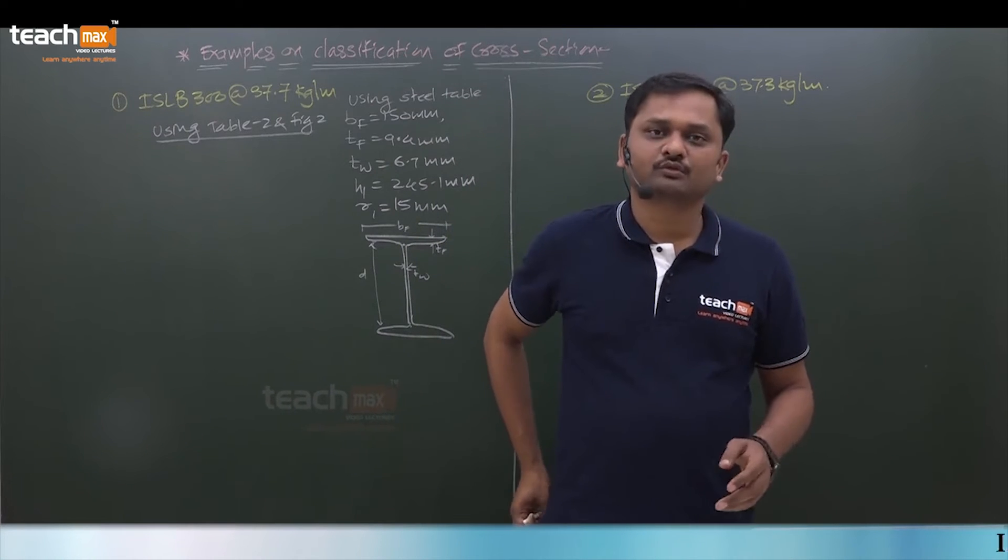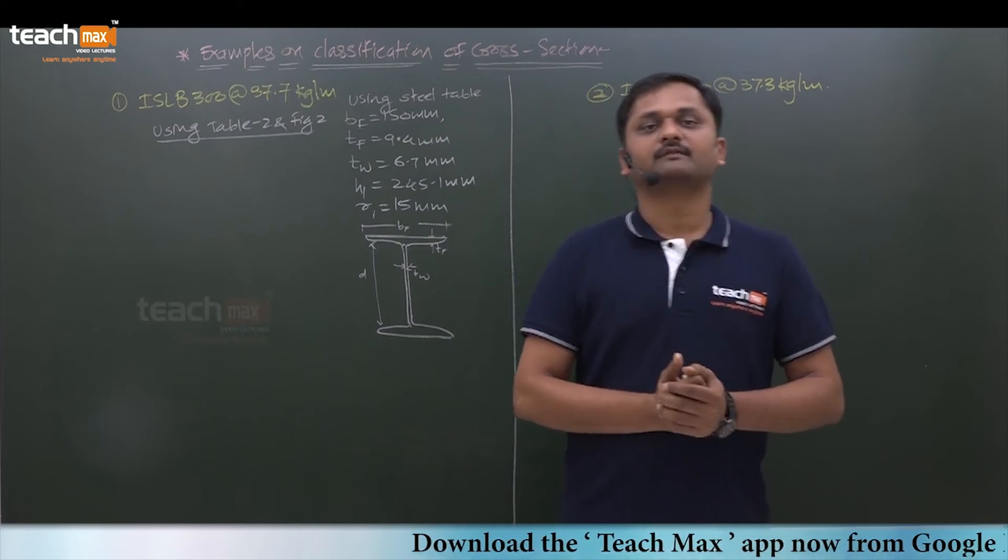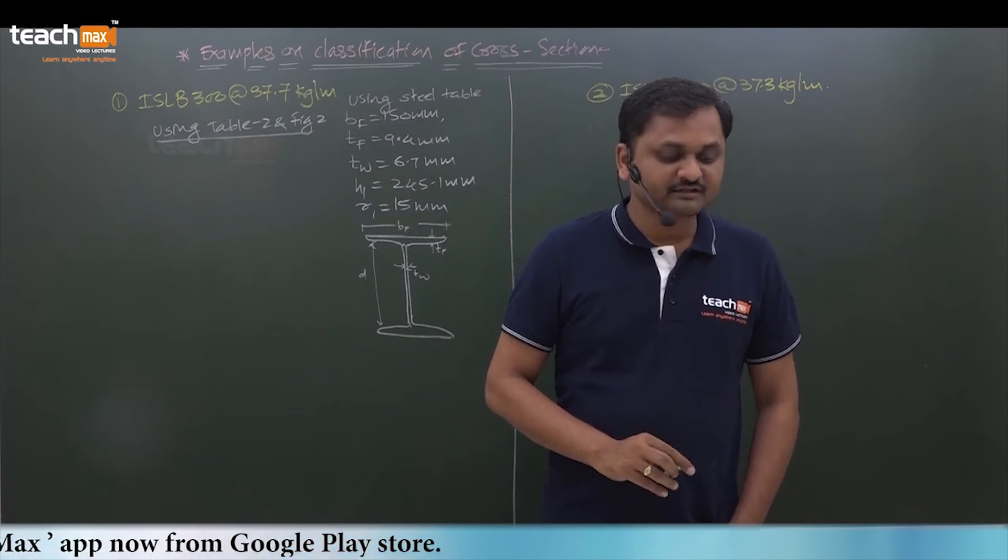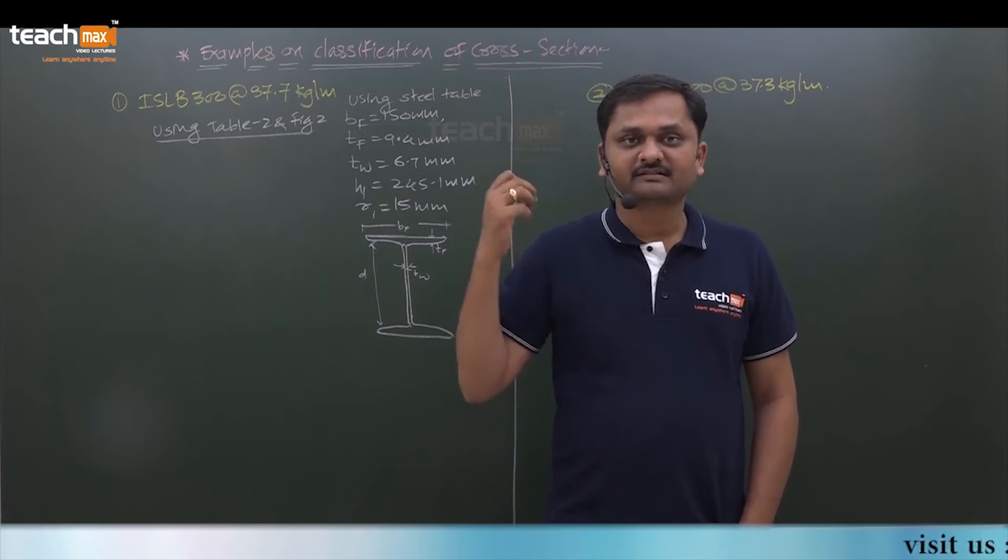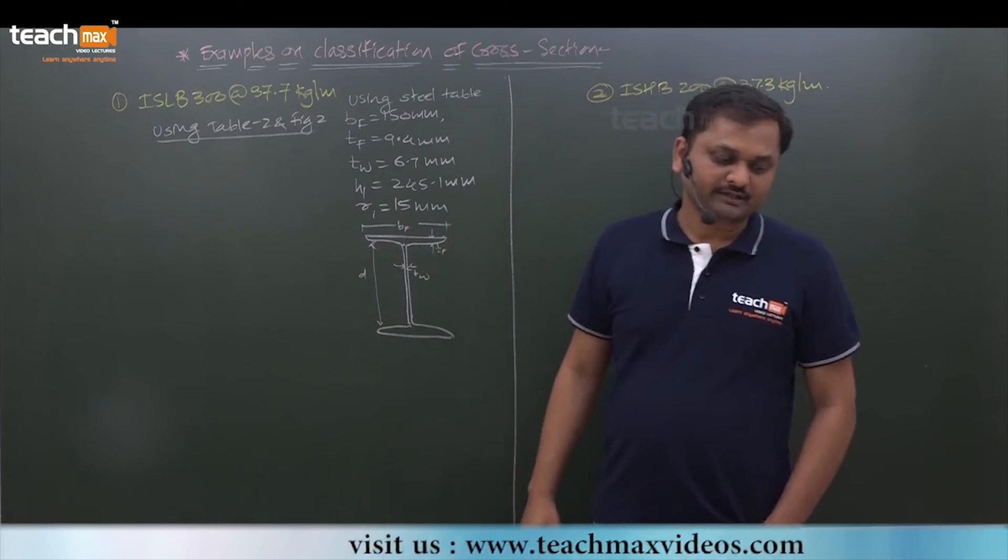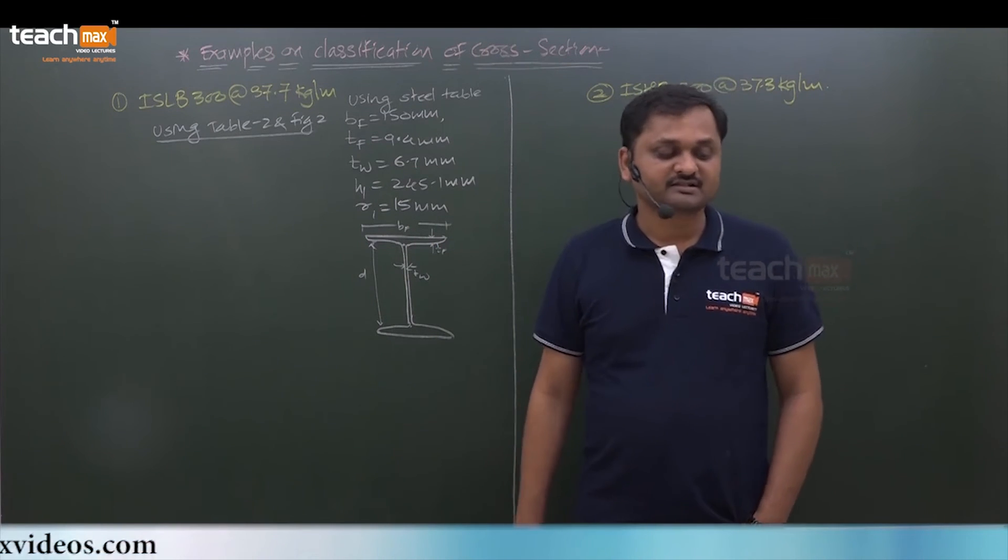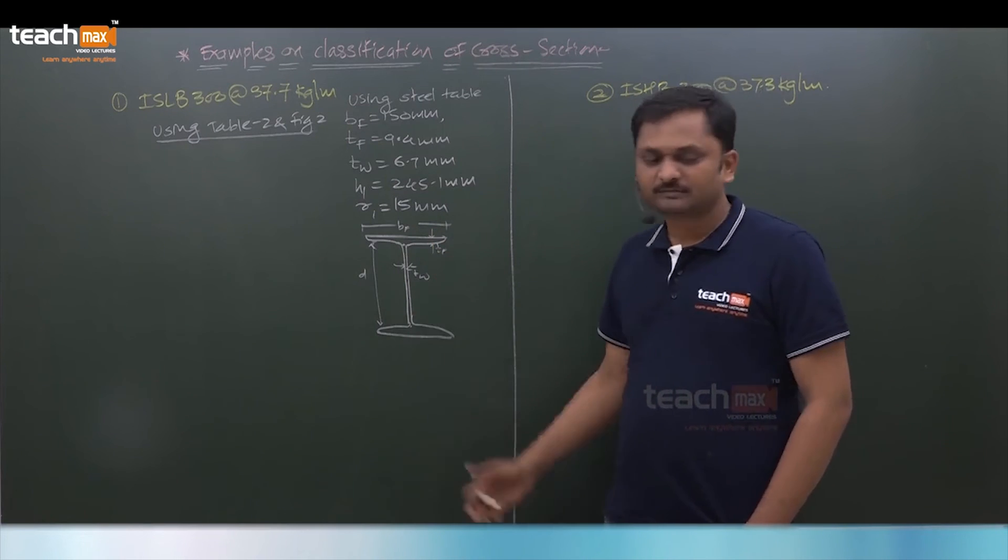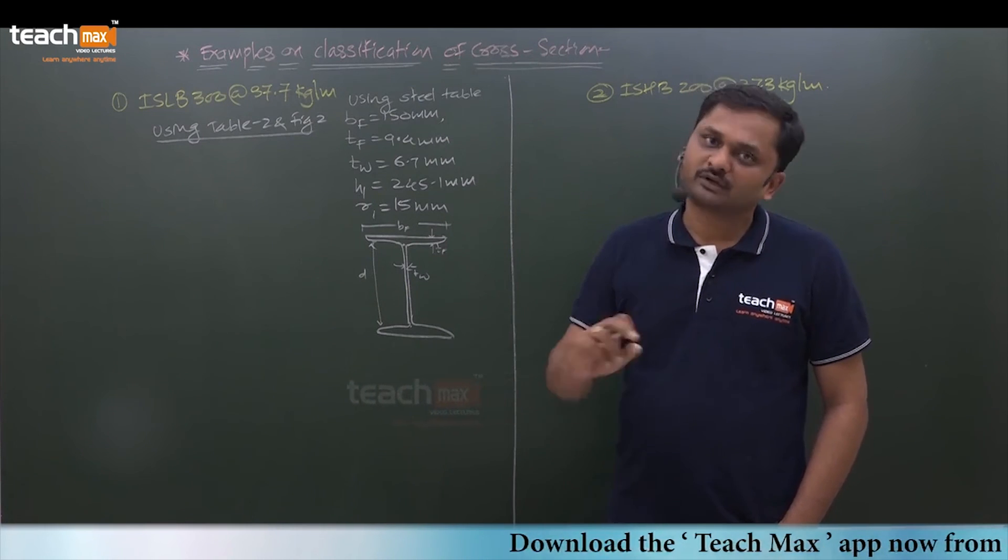If you refer figure 2 and table 2 of IS, we understand exactly the first row, outstanding element of compression flange. Go with the table page number 18 of IS, table 2, width to thickness ratio limiting width to thickness ratio. Outstanding element of compression flange for rolled section b by tf. Here this is generally compression flange top, we assume, because loading is downward. So many times top above the neutral axis compression develops, below the neutral axis tension develops. Outstanding element of compression flange, any one flange you can consider, for rolled section. Yes, we are finding class of rolled section. The formula is b by tf where b is what, for that we need to see the figure.